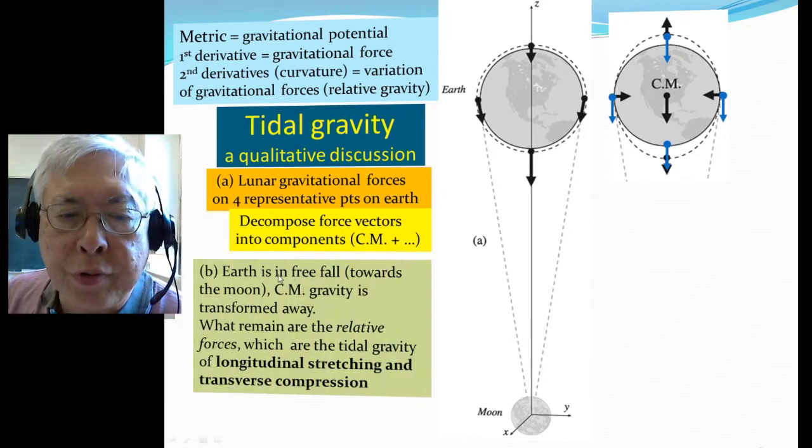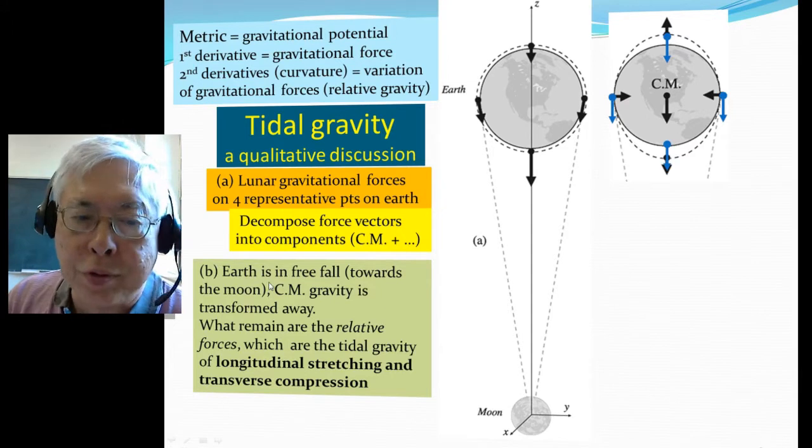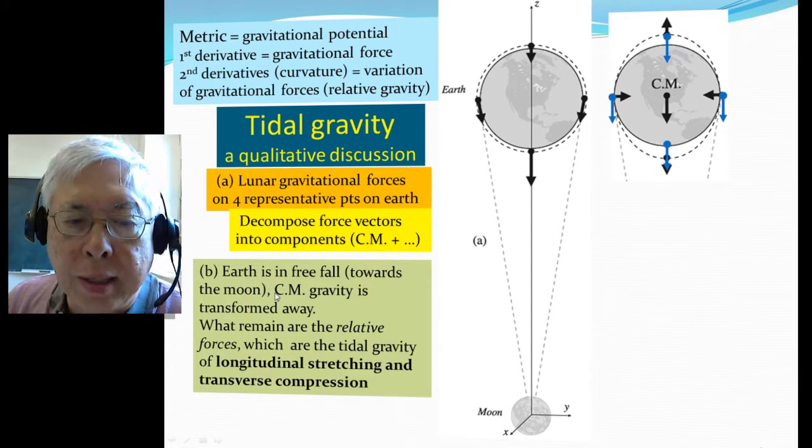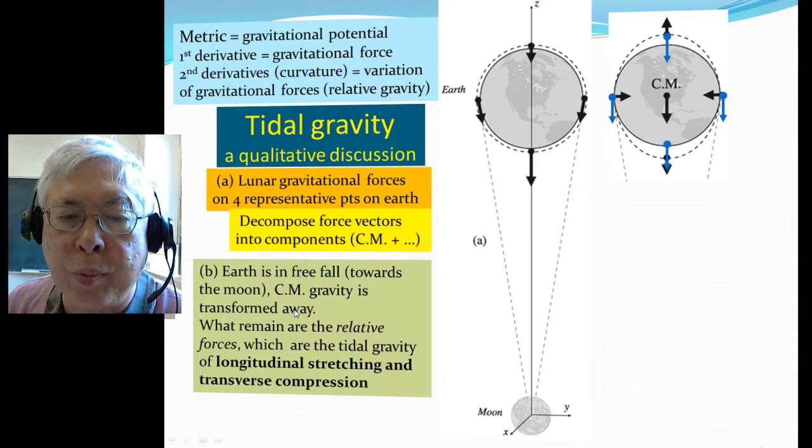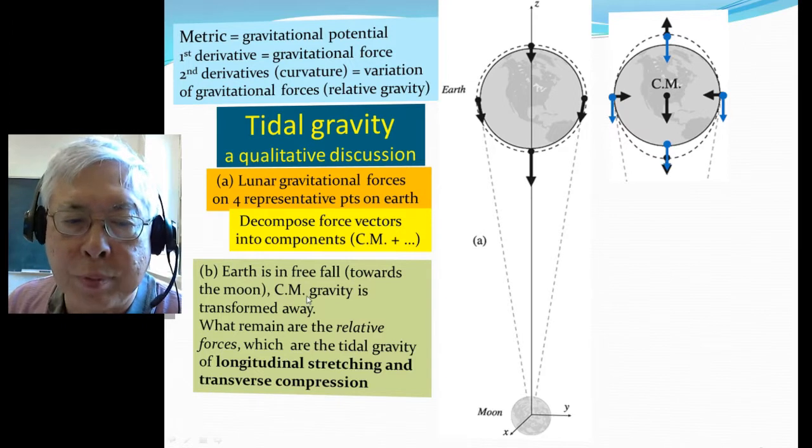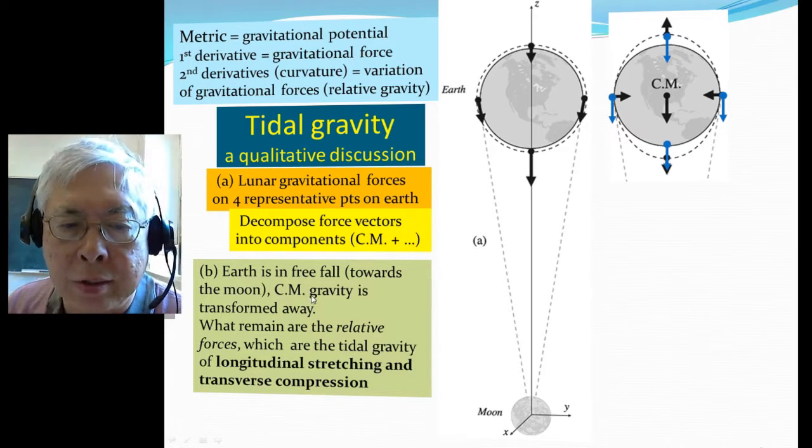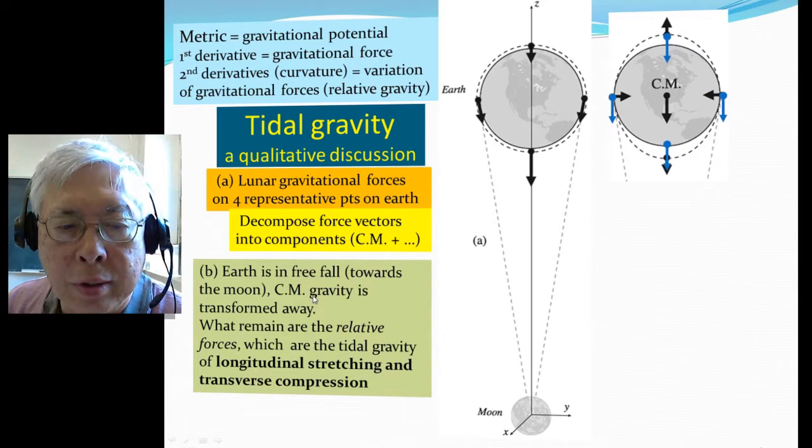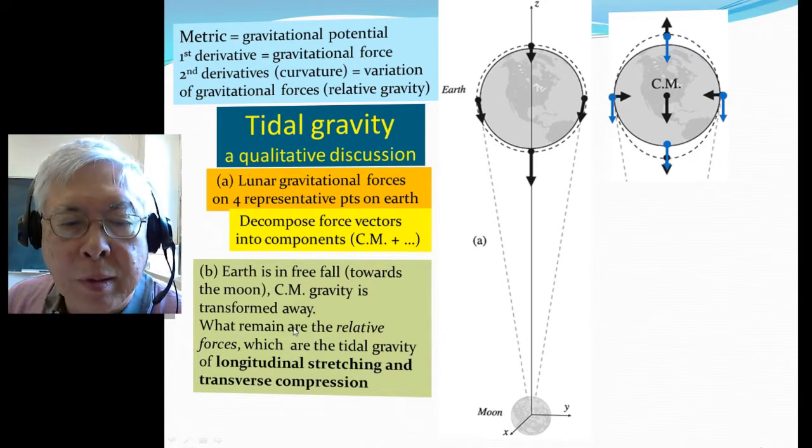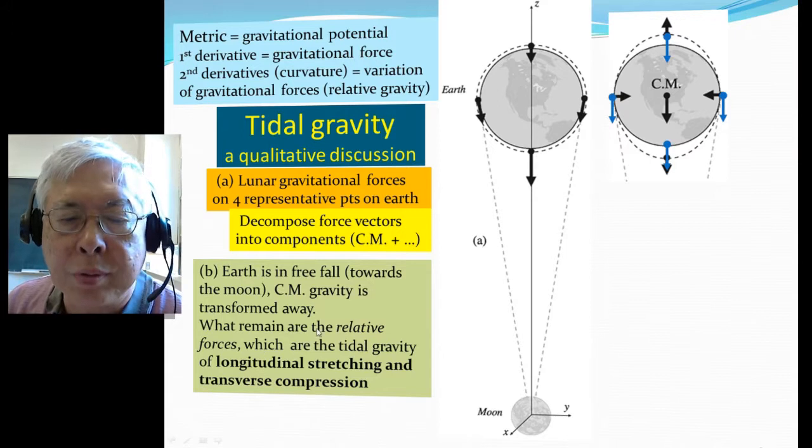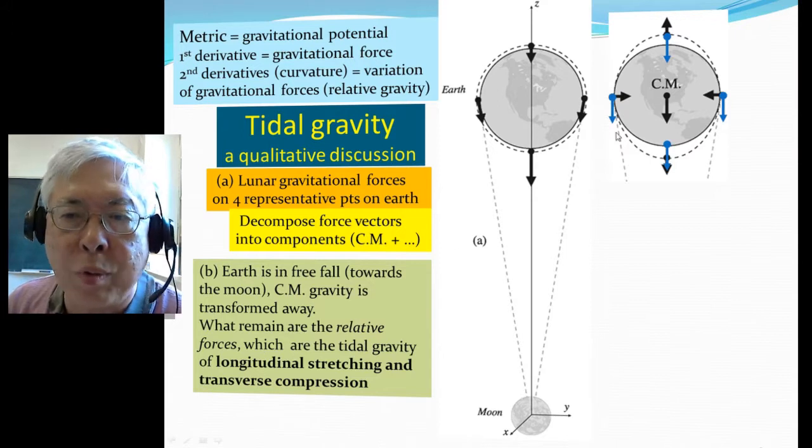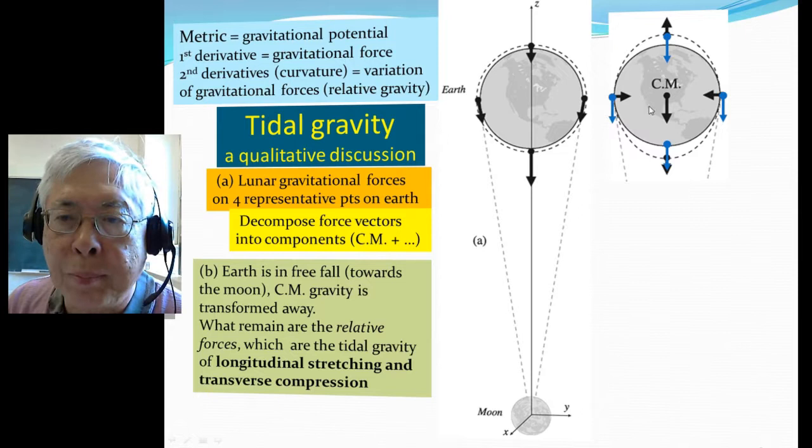So the point is the Earth is in free fall towards the moon, and the moon of course also in free fall towards the Earth. Because the center mass gravity is transformed away, that's the force making the Earth going around the moon and the moon going around the Earth. What remains is the relative force, in which the center mass is transformed away, only the black component left.